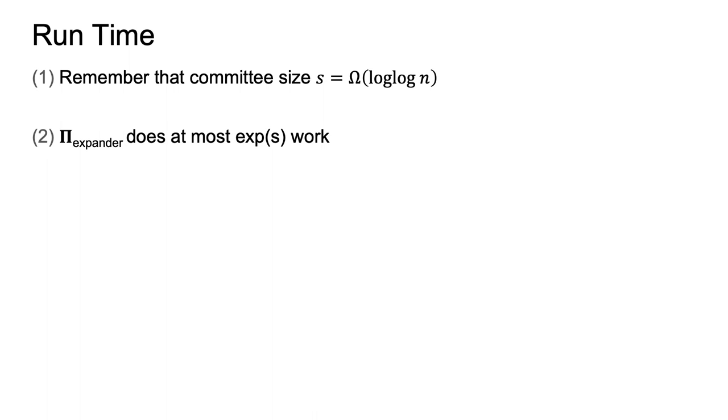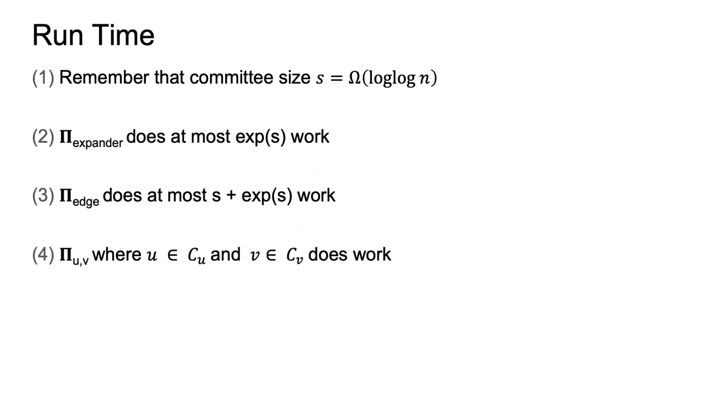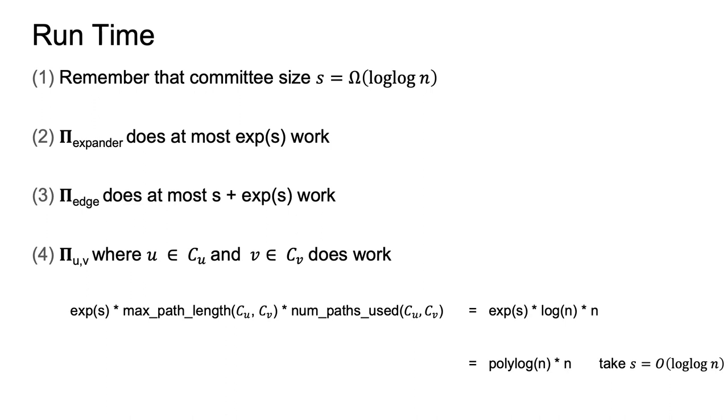How efficient is our protocol? Recall that committees are of size s, that pi expander thereby does exponential work in s, and that pi edge also does exponential work in s. Now, let us calculate the cost of a single uv communication, where u is in committee cu and v is in cv. The total work is bounded by the product of exp s, the maximum path length between cu and cv in the butterfly network, and the number of such paths used by the butterfly's secure communication protocol. Thus, substituting in s equals o log log n, we see that the total work is linear.